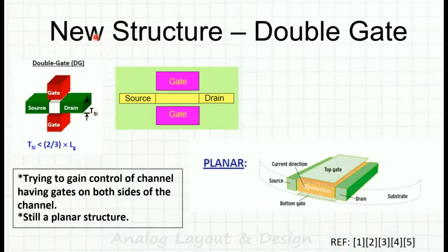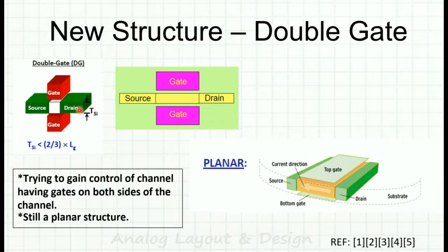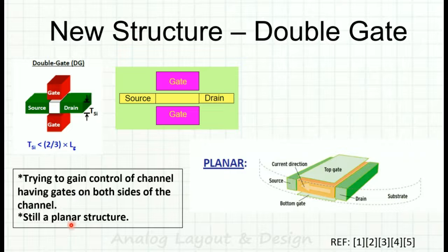Even with SOI, the gate still can't control the channel completely. So a double-gate structure was proposed: a gate on top and a gate on bottom with drain, source, and channel in between. This is still a planar construction, trying to gain full control of the channel by having gates on both sides.